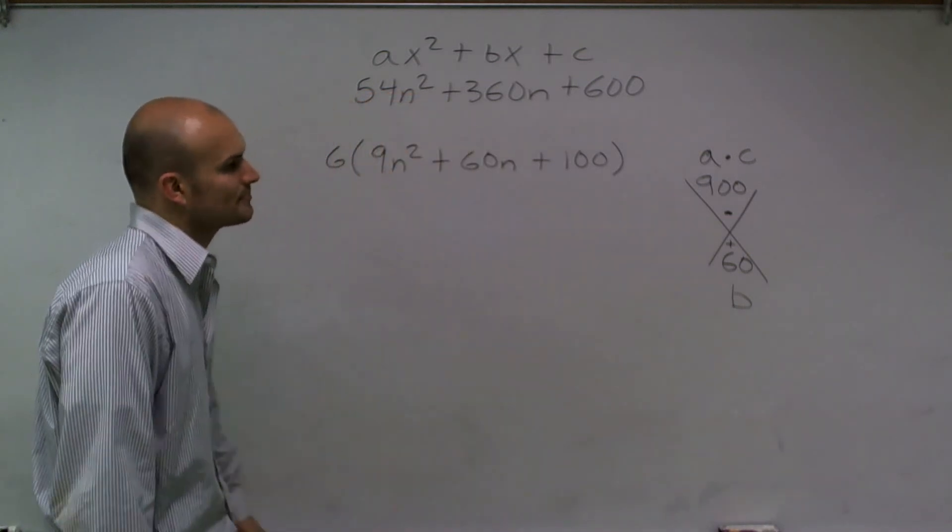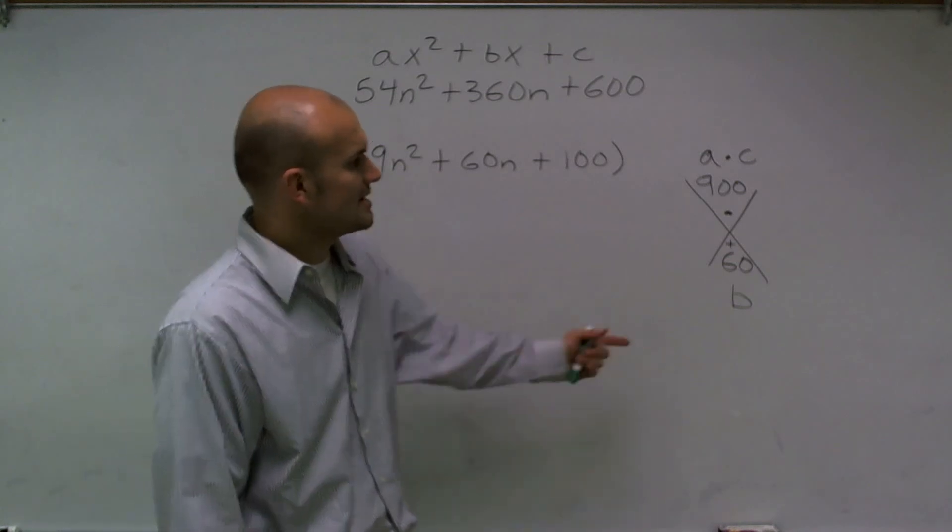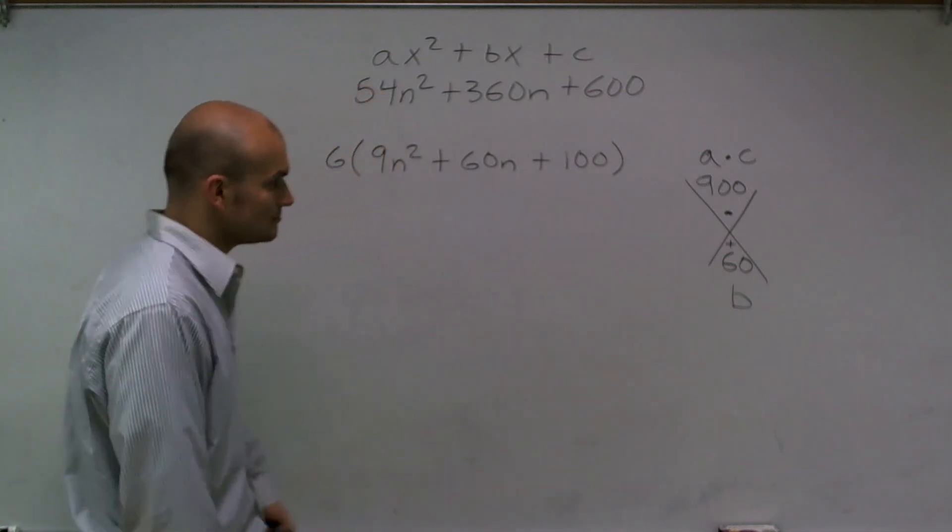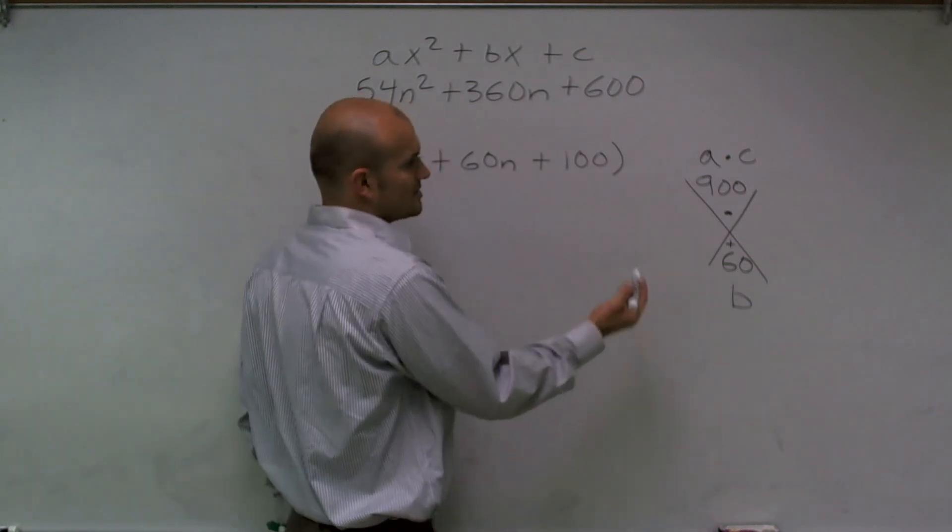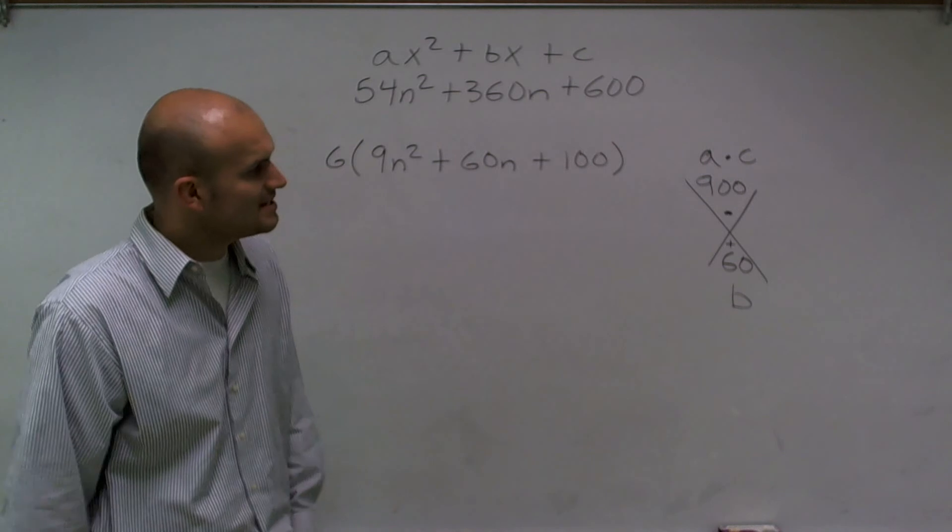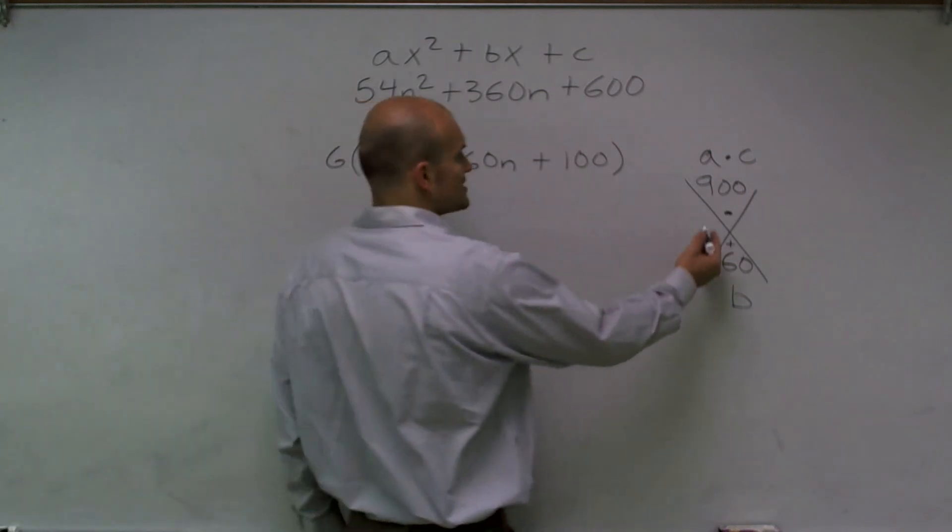And what we notice is, or add up to give you 6 but multiply to give you 90, what we see here is if we have 30 plus 30...